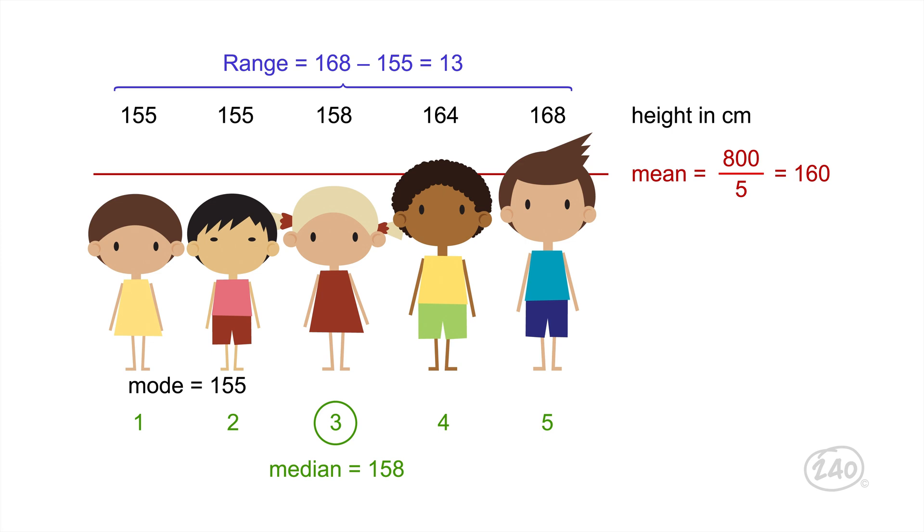Here's an example. Five students have their height measured in centimeters. The data set is 158, 155, 164, 155, and 168. Find the mean by adding up all of the numbers in the data set and dividing by the number of numbers. That gives us 800 divided by 5 or 160 centimeters. Next, the median is the middle number. 158 is right in the middle, so that's our median. Lastly, the mode is the number that you see the most in your data set. Since two of the students are 155 centimeters tall, that's our mode.